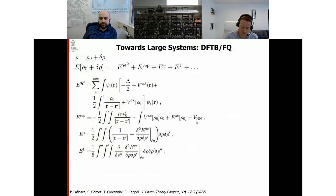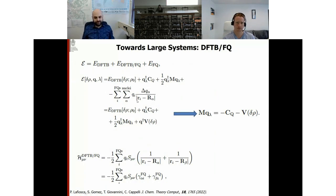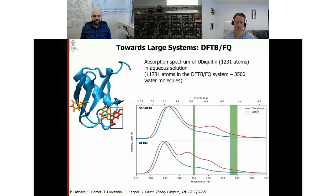We may also compute large systems by coupling our method with DFTB, including all different DFTB approximations available in the code. You simply add the solvent contribution to the Hamiltonian, and embedding propagates naturally to properties. As an example, we computed the absorption spectrum of ubiquitin — a protein with more than 1000 atoms — in aqueous solution, showing the difference between gas phase and solution.